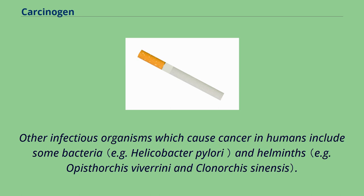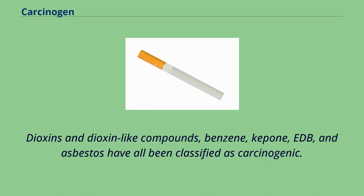Other infectious organisms which cause cancer in humans include some bacteria and helminths. Dioxins and dioxin-like compounds, benzene, kepone, EDB, and asbestos have all been classified as carcinogenic.